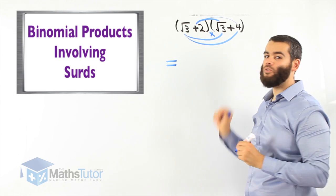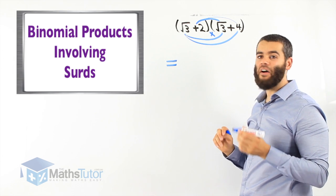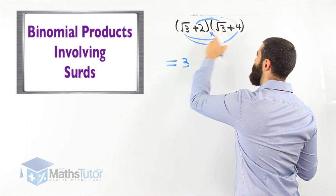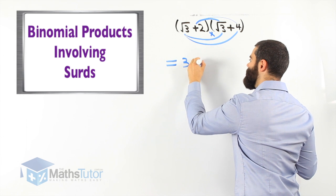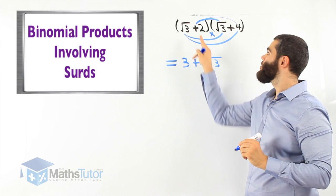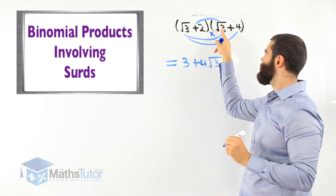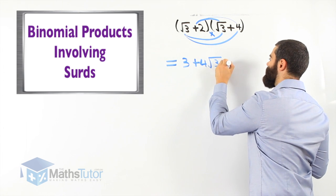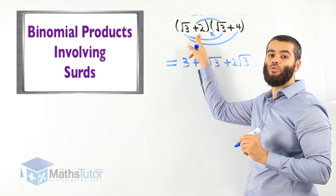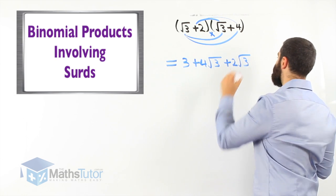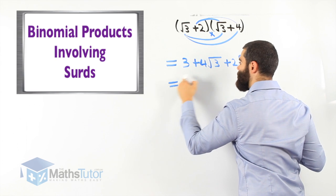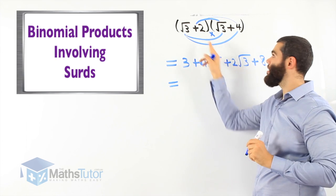Root 3 times root 3 is actually root 9. We know root 9 simplifies and becomes simply 3. Root 3 times 4 is 4 root 3. Then positive 2 times root 3 is positive 2 root 3. And positive 2 times positive 4 is positive 8. We have now completed the product.